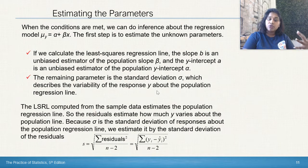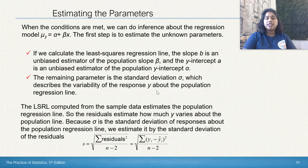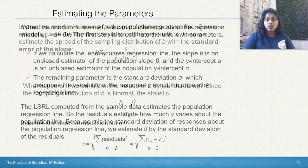The remaining parameter is the standard deviation, which describes the variability of the response y about the population regression line. Here is that LSRL and standard deviation formulas that we would need. This references back to older chapters.